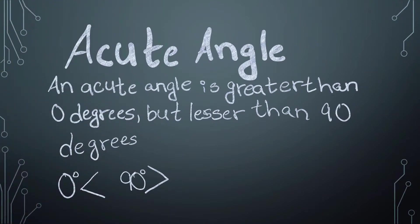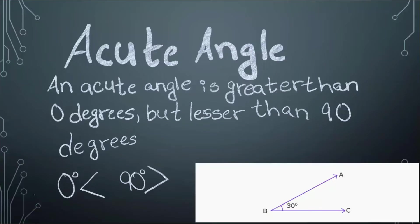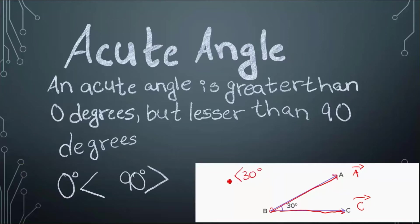Acute Angle. An acute angle is greater than zero degrees but lesser than 90 degrees. This angle has two rays: the first ray is ray A, and the second ray is ray C. Ray C will always be at zero degrees, and ray A will be at the number of degrees we want to make the angle at. Thirty degrees is greater than zero degrees but lesser than 90 degrees.